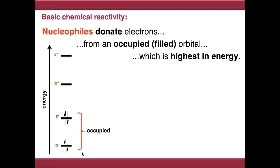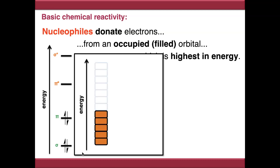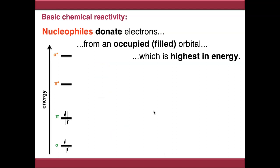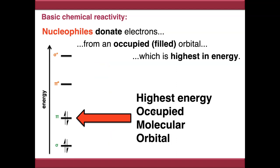The actual orbital where electrons come from is the one highest in energy. If you imagine a stack of bricks, the most energetically favourable thing to do if you want to remove a brick is to remove the one at the top — it's highest in energy and easiest to remove. Think of this brick as a pair of electrons; that's basically how the nucleophile works. Removing a brick from lower down is less energetically favourable. So what we're looking for in our nucleophile is the Highest Occupied Molecular Orbital, abbreviated as HOMO — this is where nucleophiles donate electrons from when attacking electrophiles.